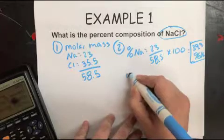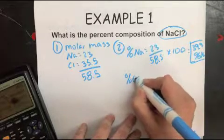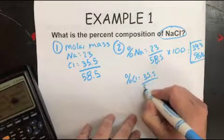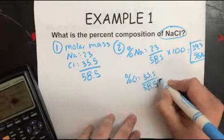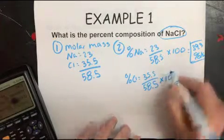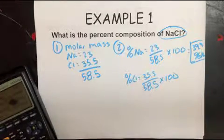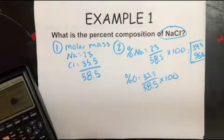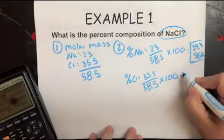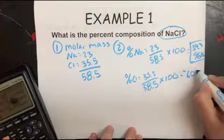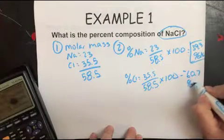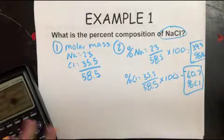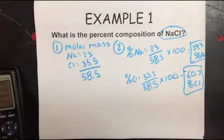Okay, then you have to do the same thing with chlorine. You do 35.5 divided by 58.5 times 100, and you get 60.7% Cl. Okay, so it's pretty straightforward.